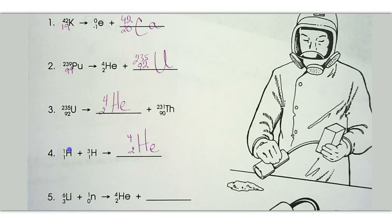And then number 5, we have 6 plus 1 equals 7. So 4 plus 3 is going to equal 7 on the right. And then 3 and 0 equals 3. And 2 and 1 is going to equal 3 on the right-hand side. And if we look on the periodic table, element number 1 is hydrogen. So our final answer without the brackets is 3 over 1 hydrogen.